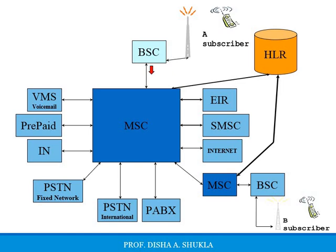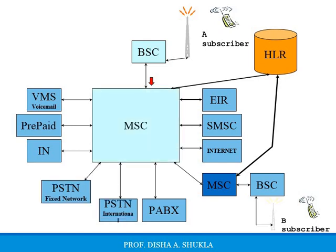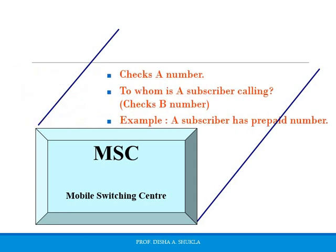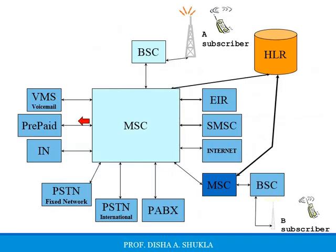From the BSC, your call will be further transferred to the MSC. MSC is the mobile switching center. What MSC does is it checks the number of A and also checks to whom A is calling — that is, which number the user is calling. It also checks whether the subscriber has a prepaid account or a postpaid number, and based on that, different services will be called. So MSC checks the calling user, the called user, and whether subscriber A has a prepaid number or not.